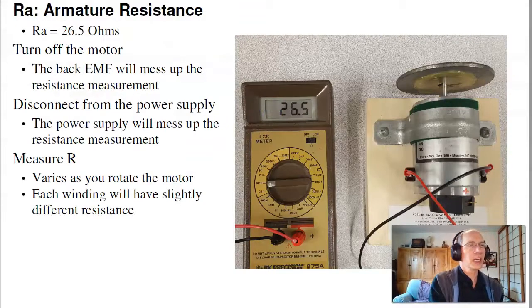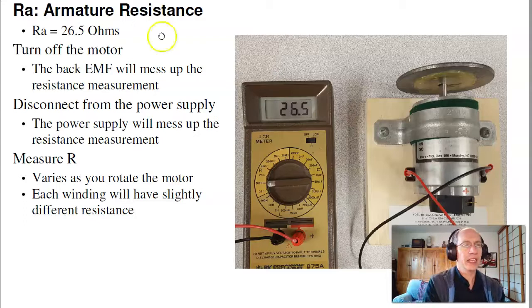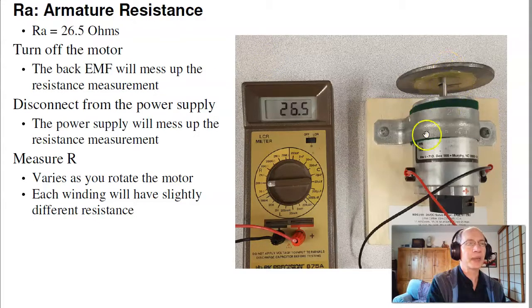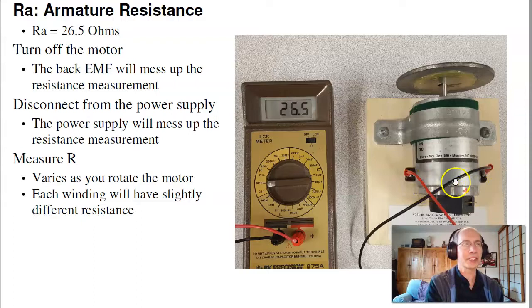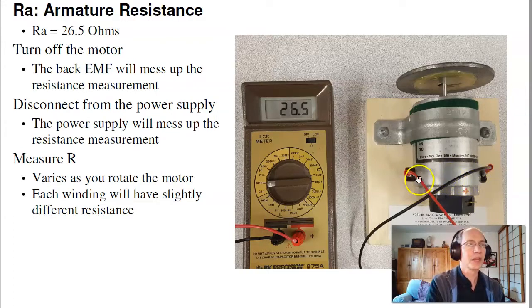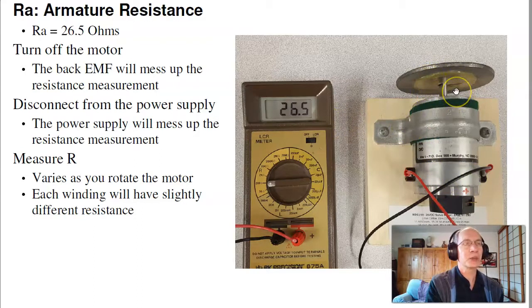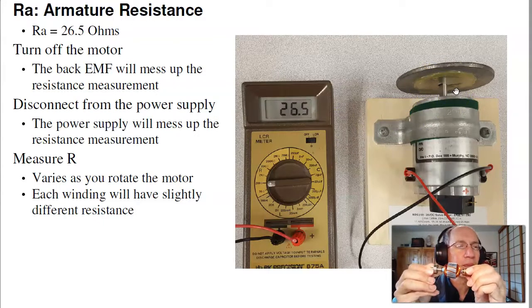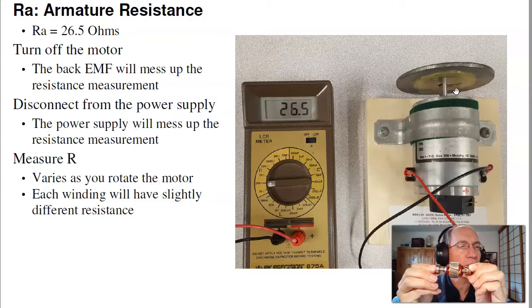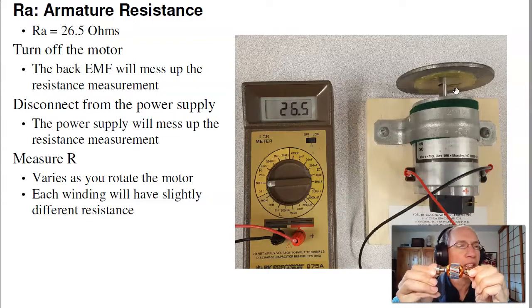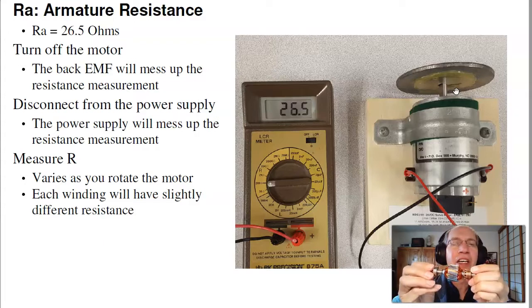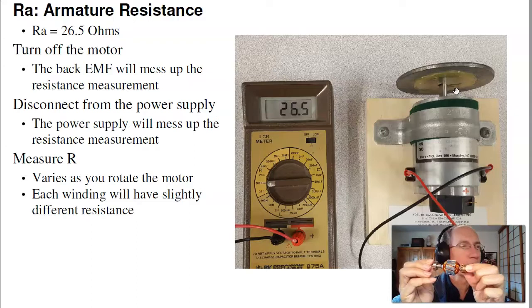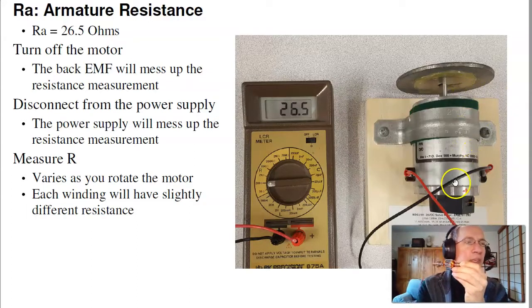If I want to measure the inductance, take the motor and turn off the motor. If the motor spins, I get back EMF, which will mess up the measurement. Disconnect the motor from the circuit because the circuit has some resistance that will mess up the measurements. Just take the motor by its lonesome, measure the resistance across the terminals. And what you'll notice is the resistance keeps on changing as I turn it, because as I turn it I'm switching in and out different coils on the inductor. So just take the average reading or do a couple readings. Find one that's typical. This one I'll call 26.5 ohms.